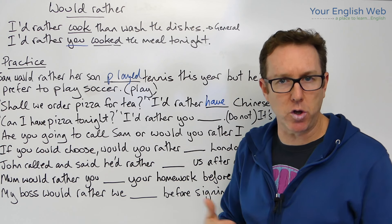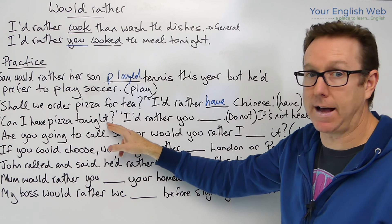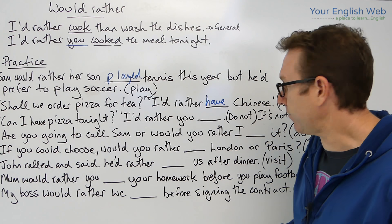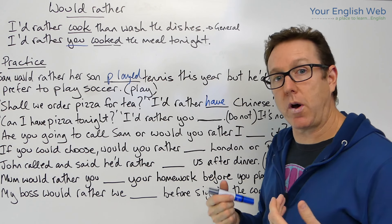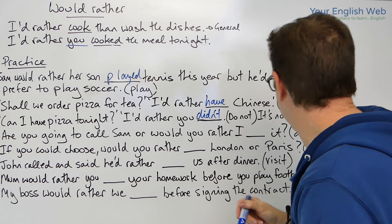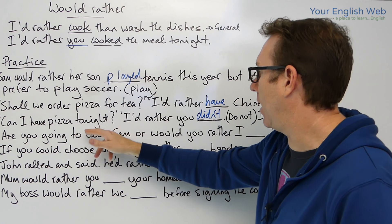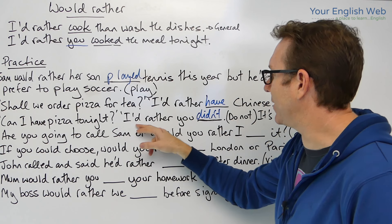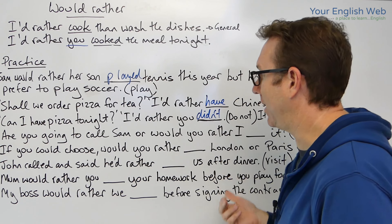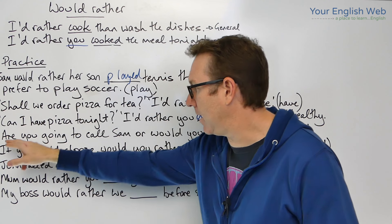'Can I have pizza tonight?' asks the boy. 'I'd rather you [didn't].' Here we are involving somebody else, so the past tense applies: 'I'd rather you didn't' — because it's not healthy. The mother says 'I'd rather you didn't have pizza' or 'I'd rather you didn't eat pizza, because it's not healthy.' Again, we bring that second person in, so we use the past tense.